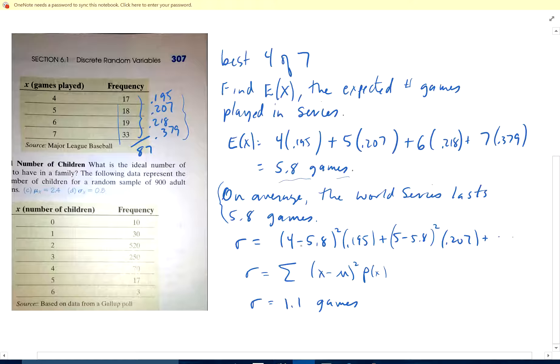The standard deviation is 4 minus the average squared times the probability of it happening. 0.195 is the probability of 4 games, 5 minus 5.8 squared times 0.207, and then I got 2 more over here. Here's my formula. I wrote that just in case you forgot. If you do this calculation, it's 1.1 games. There you have that.